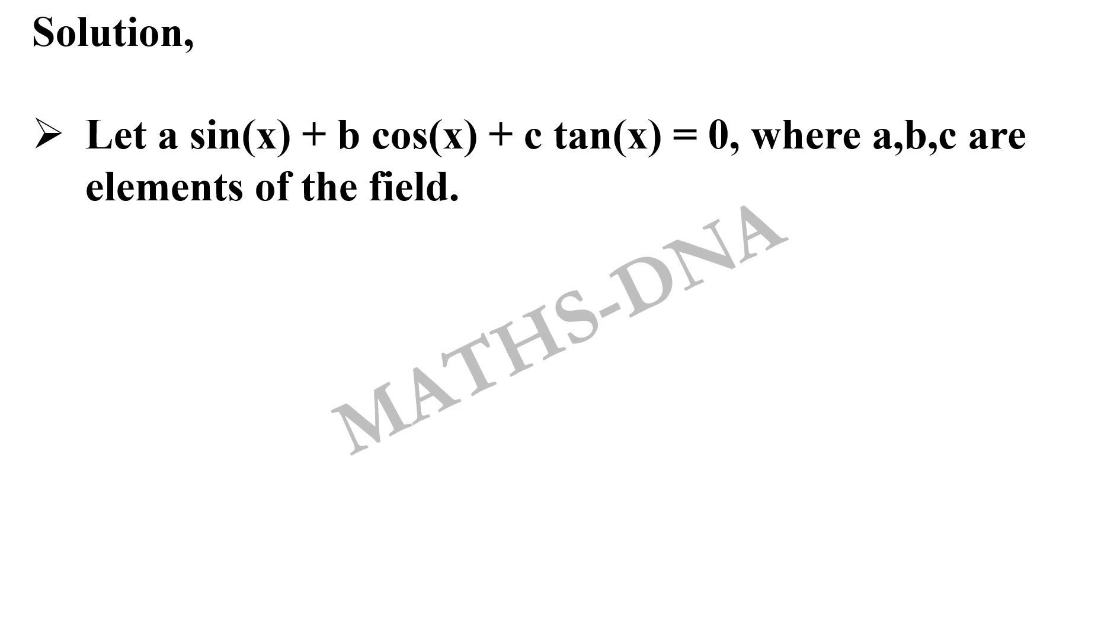Let us solve this. Firstly, we consider a, b, and c elements from the field, and we make an equation: a·sin(x) + b·cos(x) + c·tan(x) = 0. Now we know that if we find that a, b, and c are all equal to 0, then the given set—that is sin(x), cos(x), and tan(x)—will be linearly independent.